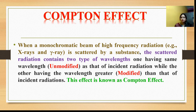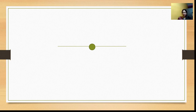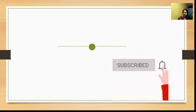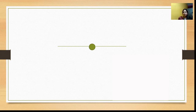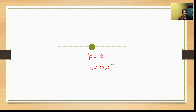To understand this, we have a diagram. Here we have a scatterer which will scatter the radiation. We consider a free electron as the scatterer. Since the electron is at rest, its momentum will be zero, and its energy is m-naught c-squared, which is the rest mass energy.